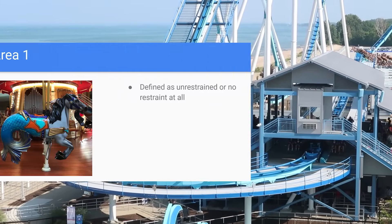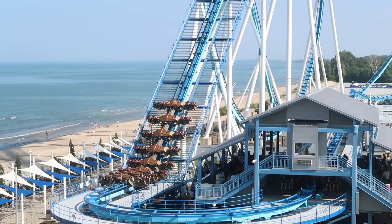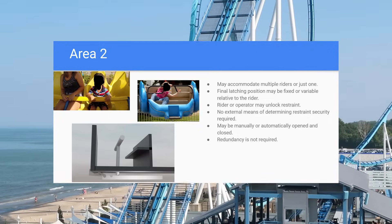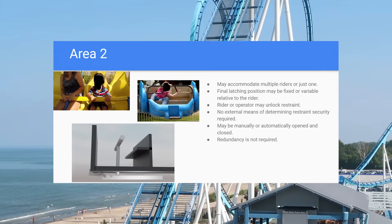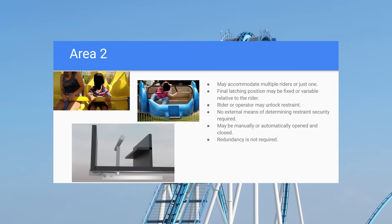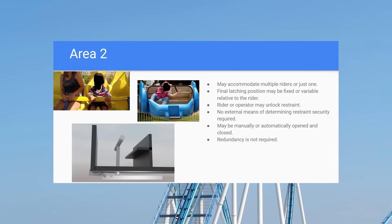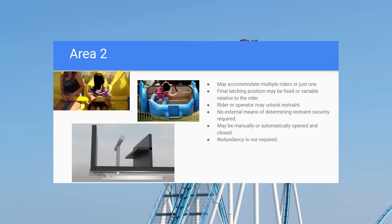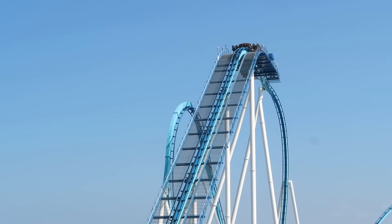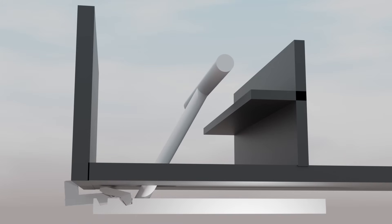Area 1 restraints are the least restrictive, and generally refers to no restraint at all — think of a ride like a carousel. Area 2 restraints may accommodate multiple riders or just one. They may have a final latching position that is fixed or variable relative to the rider, meaning they can lock in multiple positions or just one. The rider or the operator may be able to unlock it, it can be manually or automatically opened or closed, and redundancy is not required. Some examples are those on old aero mine trains and the locking bar on scrambler-type attractions.